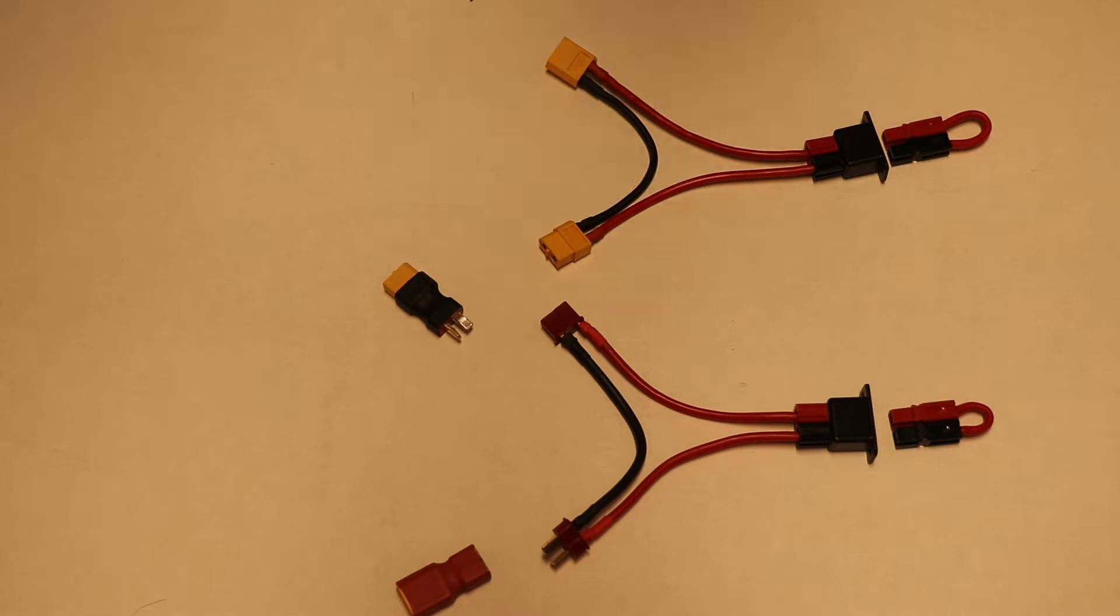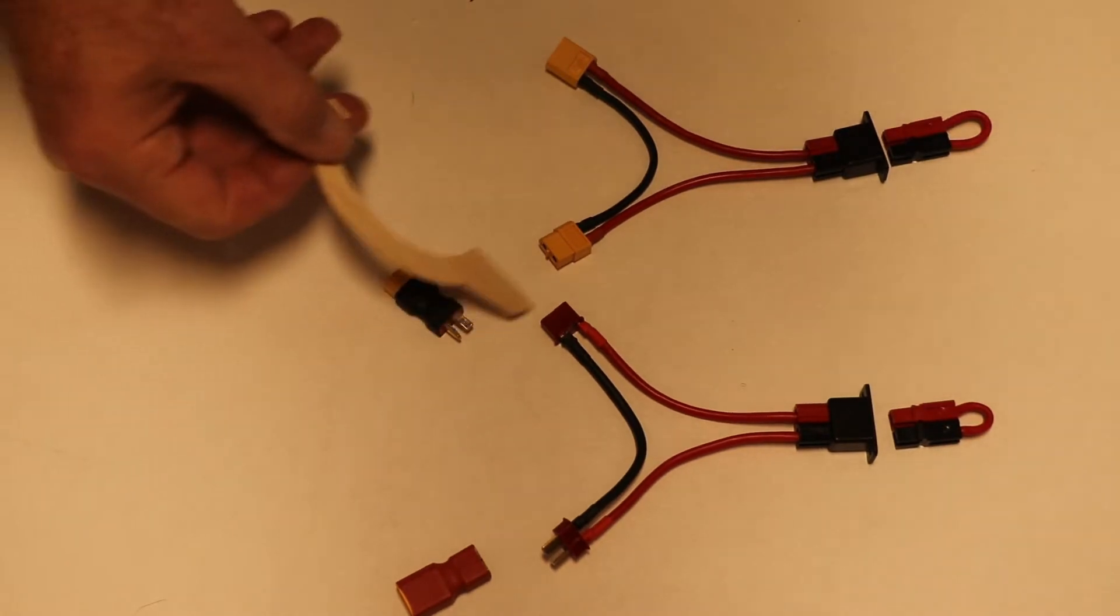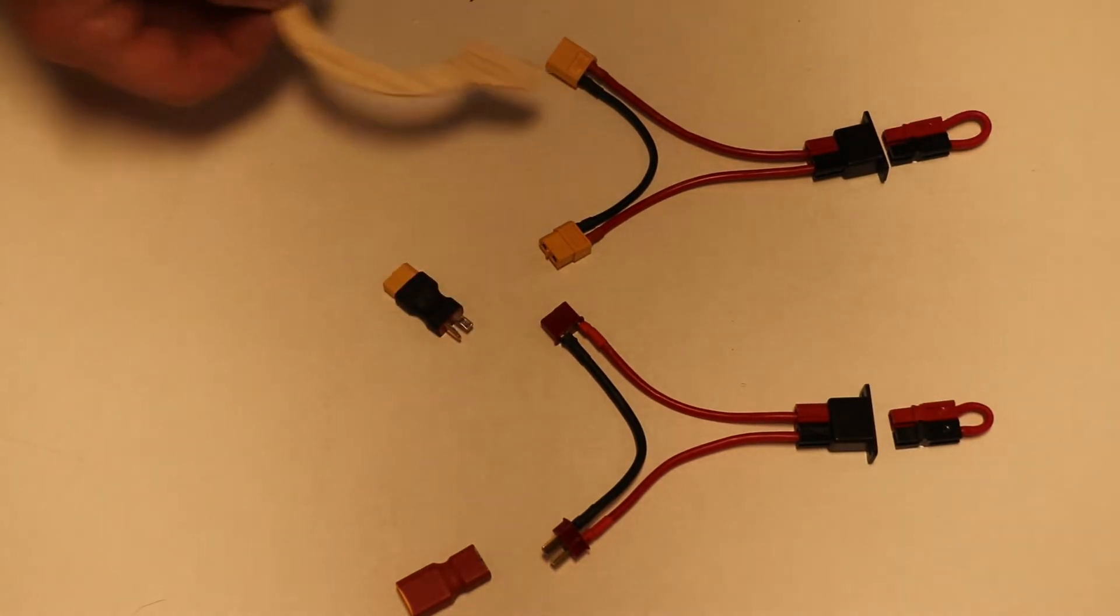This is helpful because sometimes you might have something that's all soldered up and it's got Dean's connectors on it, but you fly with XT60s.